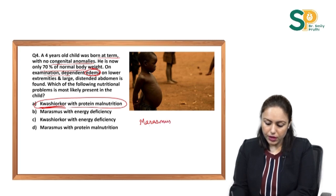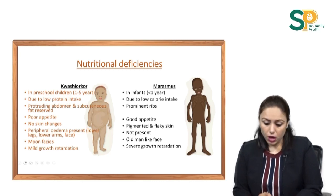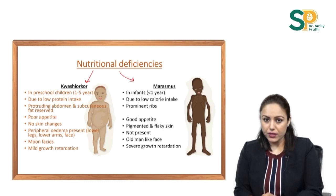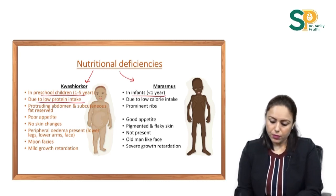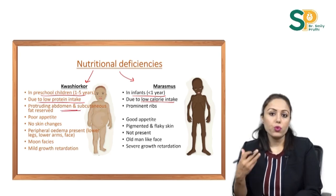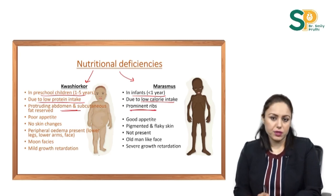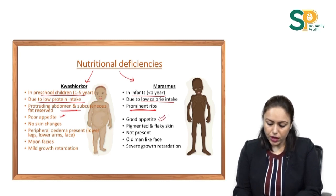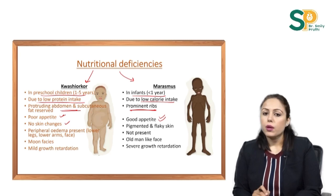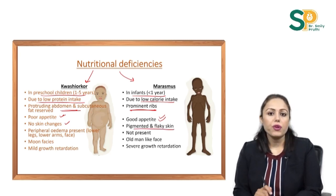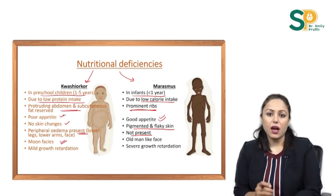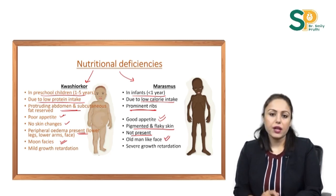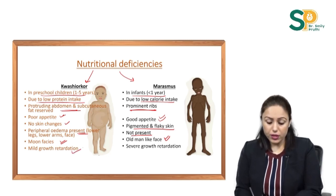Comparing Kwashiorkor and Marasmus: Kwashiorkor occurs in preschool children aged 1–5 years; Marasmus occurs in infants less than 1 year. Kwashiorkor is due to low protein intake; Marasmus is due to low calorie intake. Kwashiorkor presents with protruded abdomen and poor appetite; Marasmus shows prominent ribs and good appetite. Skin is normal in Kwashiorkor but flaky and pigmented in Marasmus. Peripheral oedema is present in Kwashiorkor, absent in Marasmus. Kwashiorkor gives a round moon-like face; Marasmus gives a typical old-man-like face. Kwashiorkor has mild growth retardation; Marasmus has severe growth retardation.